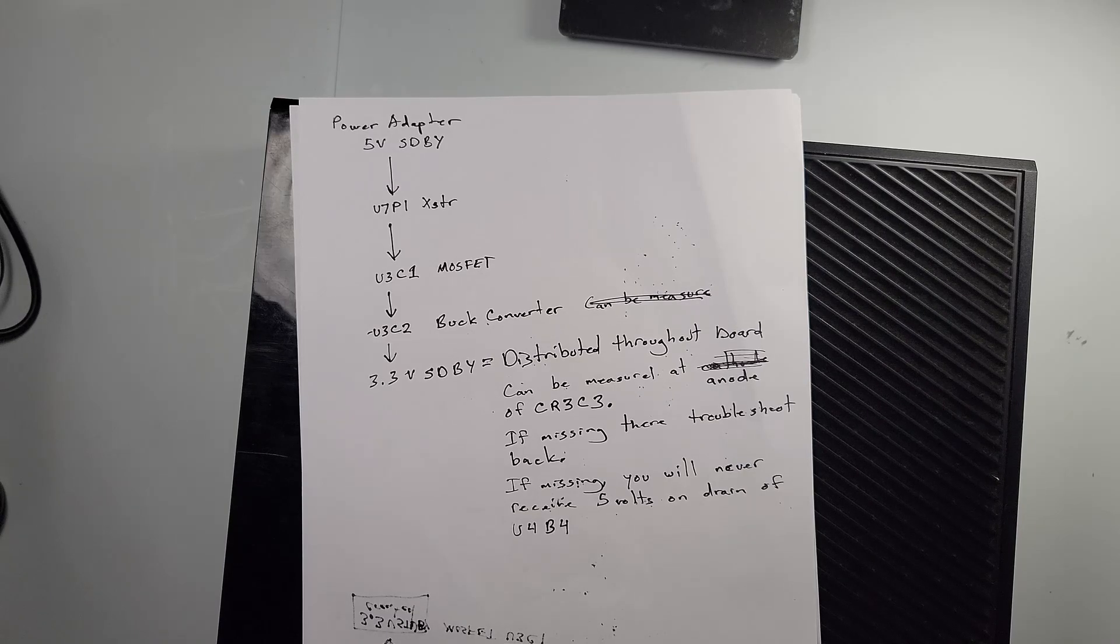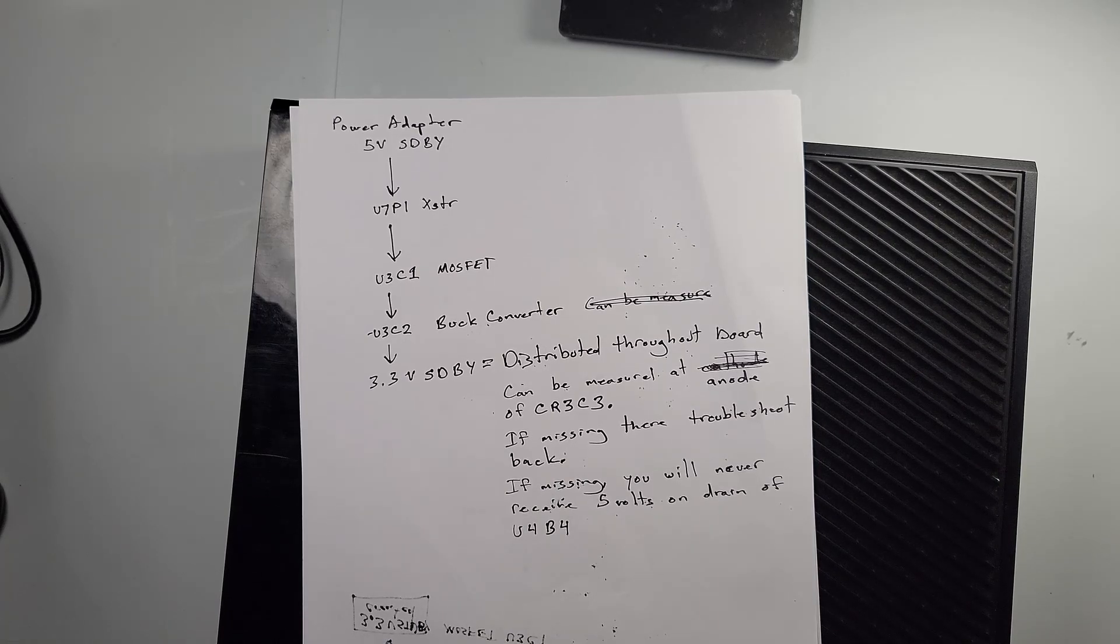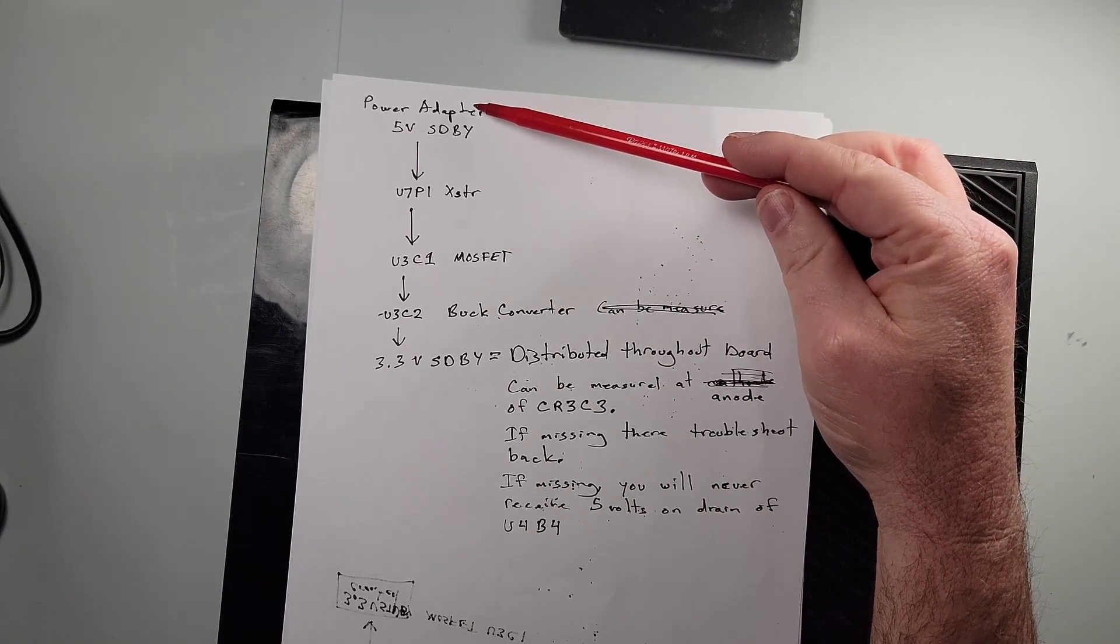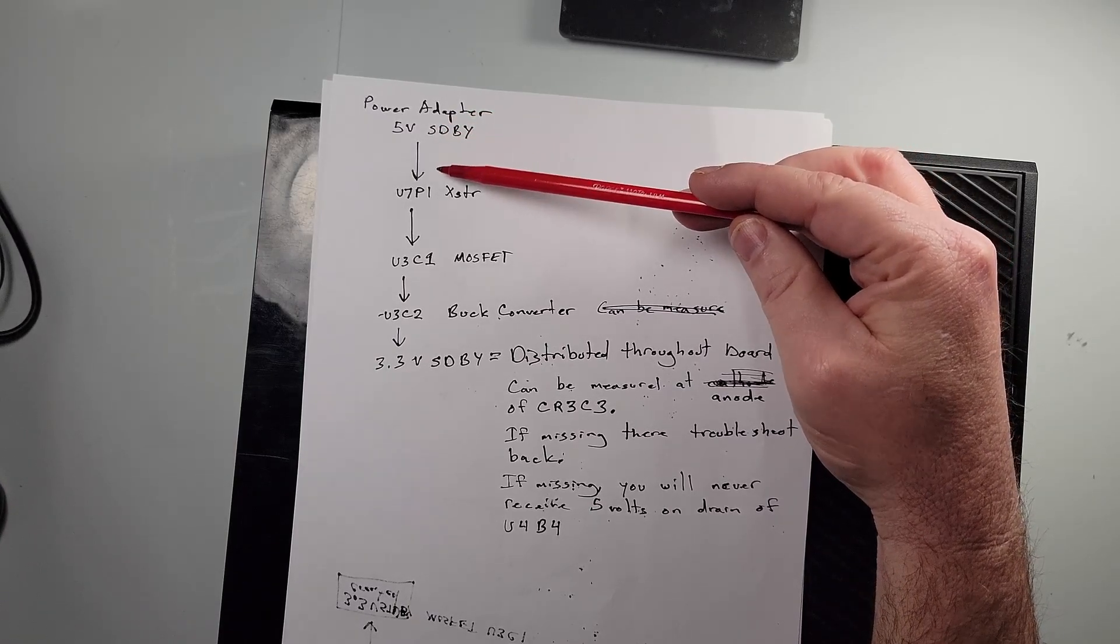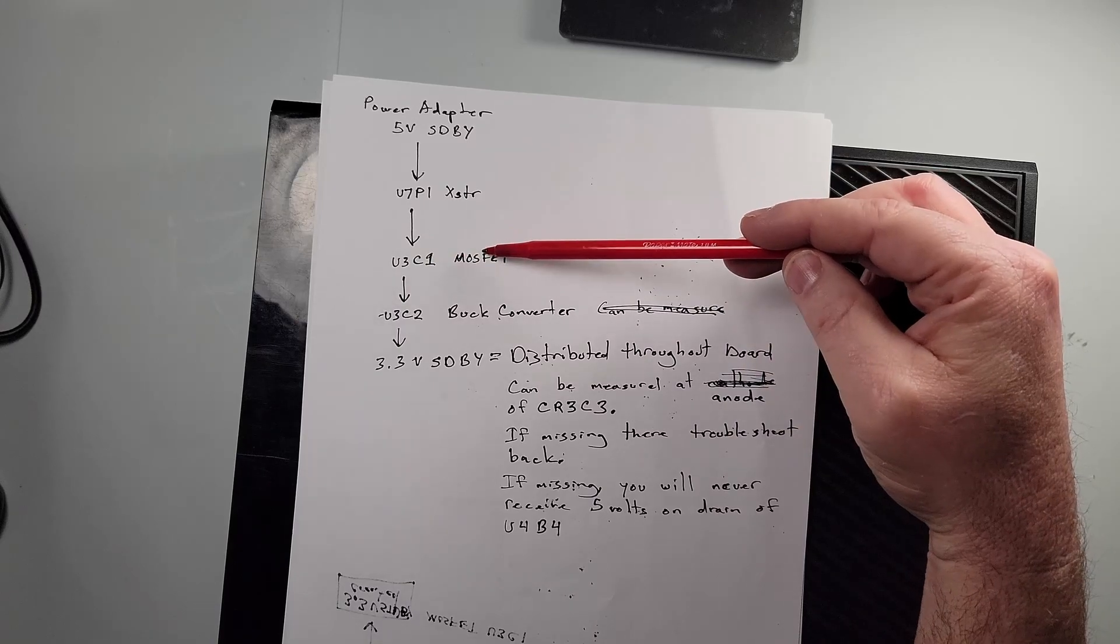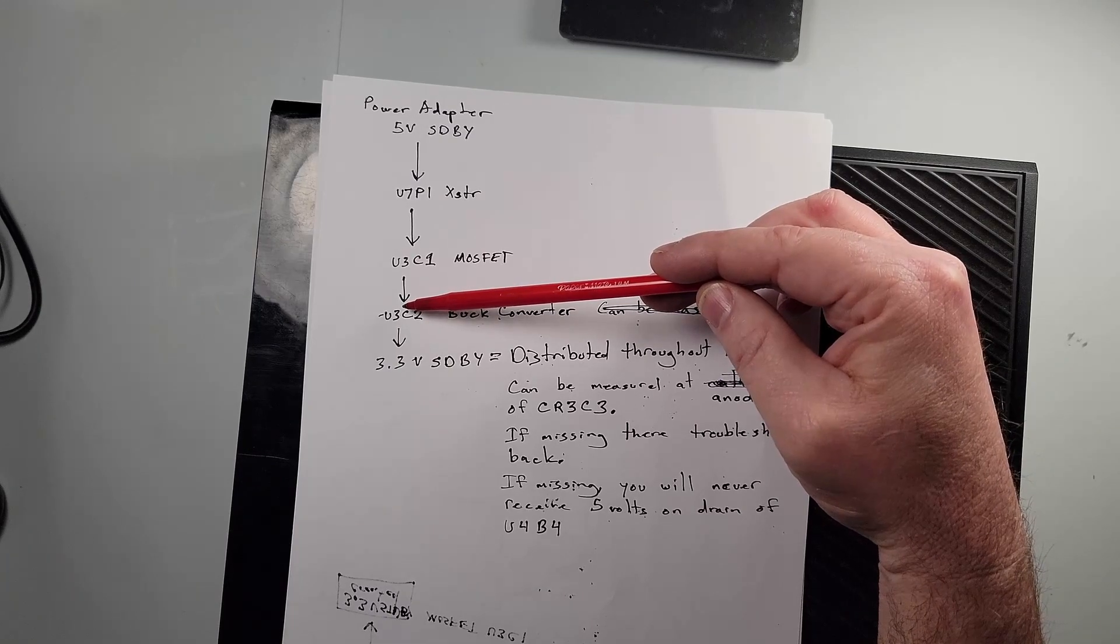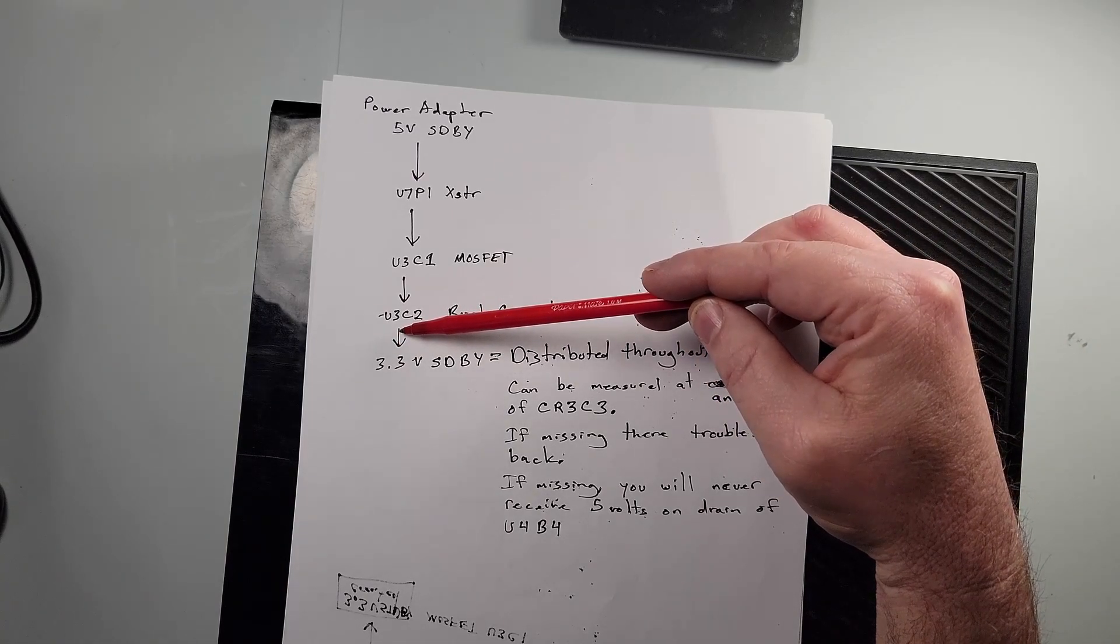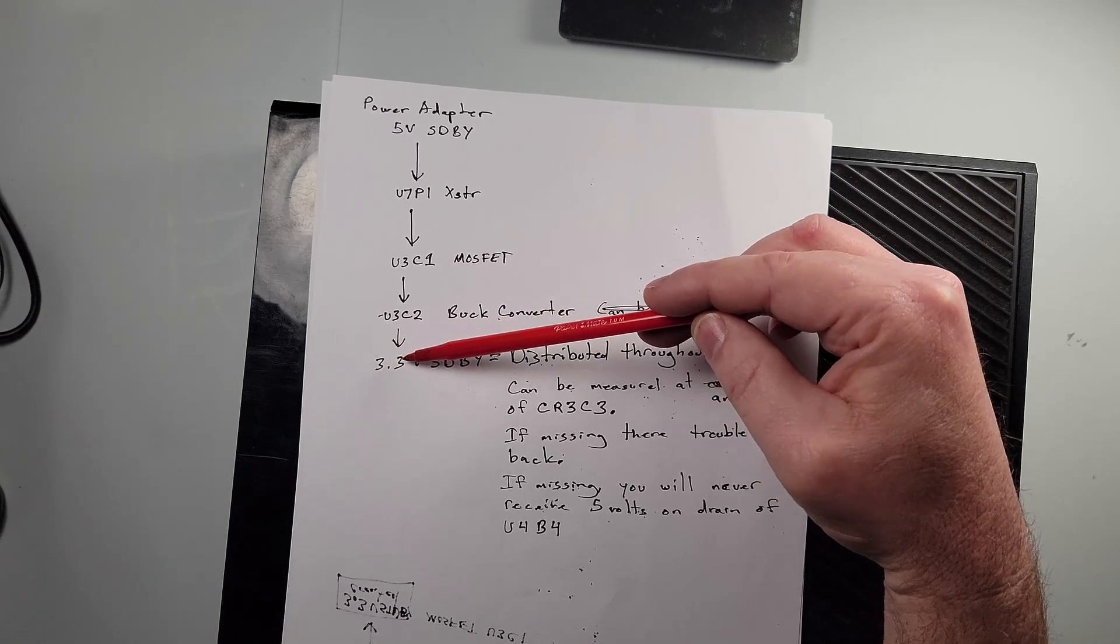All right, so that's what I did. So I think I'm going to finish this video up by having one more discussion about what I think is going on, so this maybe can help somebody else. And if I'm wrong about anything please leave a comment to correct me because I truly do want to learn. So we have power coming from our power adapter and that is our five volt standby. That five volt standby is going to be felt at U7P1 which is a transistor which is then going to turn on and go to U3C1 which is a MOSFET which will cut that MOSFET on, which will output five volts to U3C2 which is our buck converter. And the buck converter is what's going to actually produce or at least provide a path for current to flow to actually enable our 3.3 volt standby.